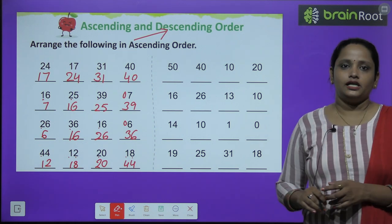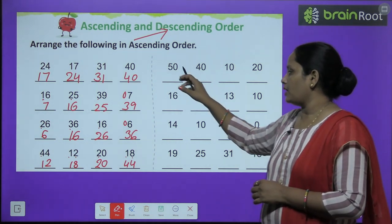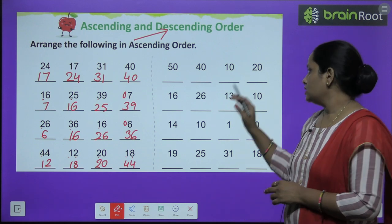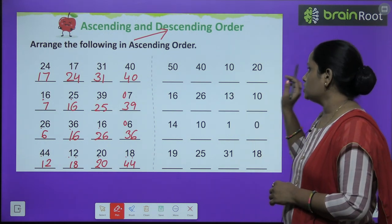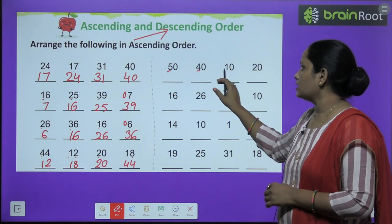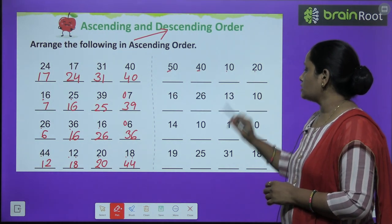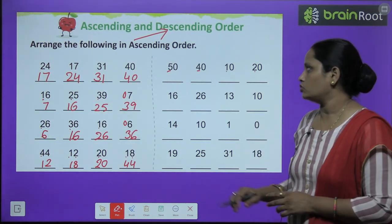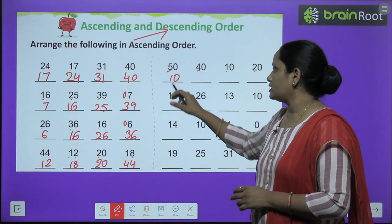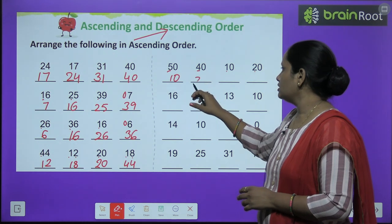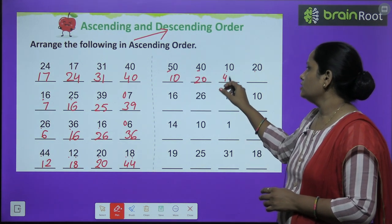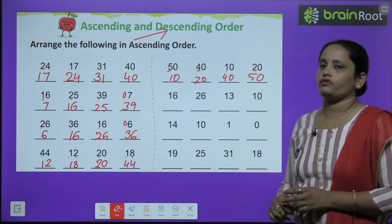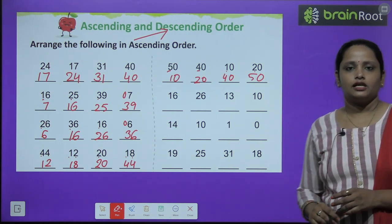Similarly, next pe aenge. Yahan pe hai fifty, forty, ten, twenty. Toh sab ka pahla word dekhenge. Sab mein pahla kya hai? Five, four, one, two. Toh one wala pehle likh denge: ten. Then twenty, forty, and then fifty.